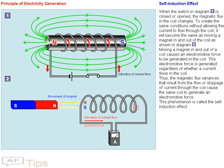Thus, the magnetic flux variances that result from the flow or stoppage of current through the coil cause the same coil to generate an electromotive force. This phenomenon is called the self-induction effect.